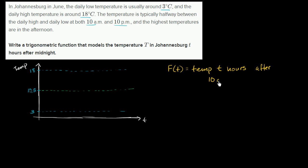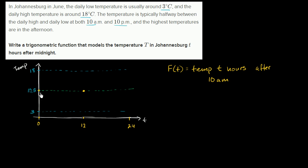At t equals 0, that means we're at 10 a.m., where we're halfway between the daily low and the daily high. Now, what is the period of this trigonometric function? After 24 hours, we're back to 10 a.m., so our period is 24 hours. Let's put 24 hours there, and halfway is 12 hours. After 12 hours, we're at 10 p.m., back at the midway between our lows and highs. After 24 hours, we're back at 10 a.m.